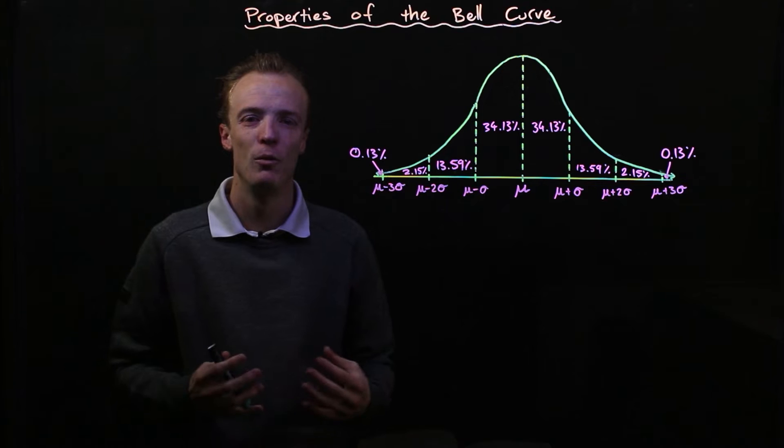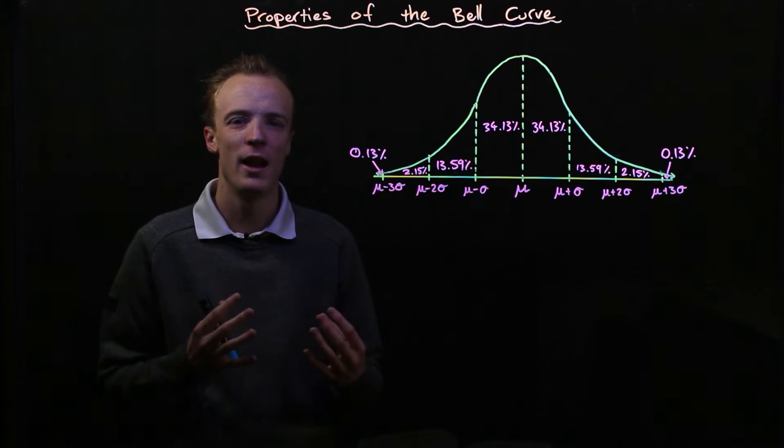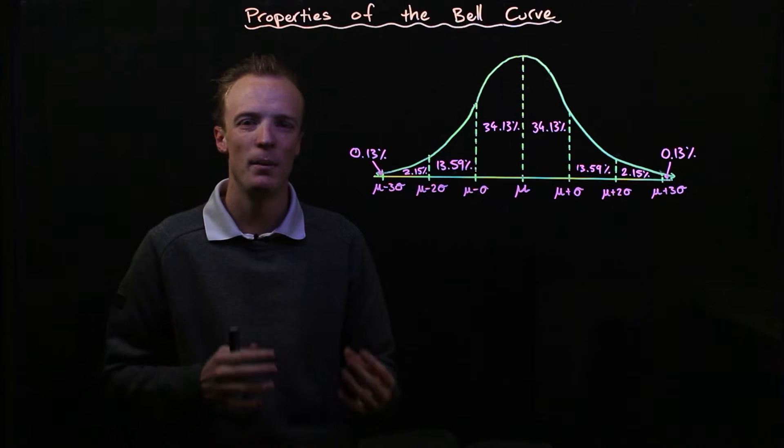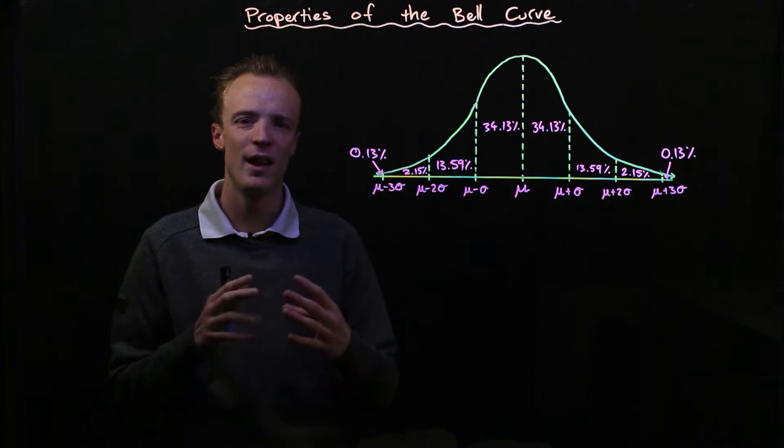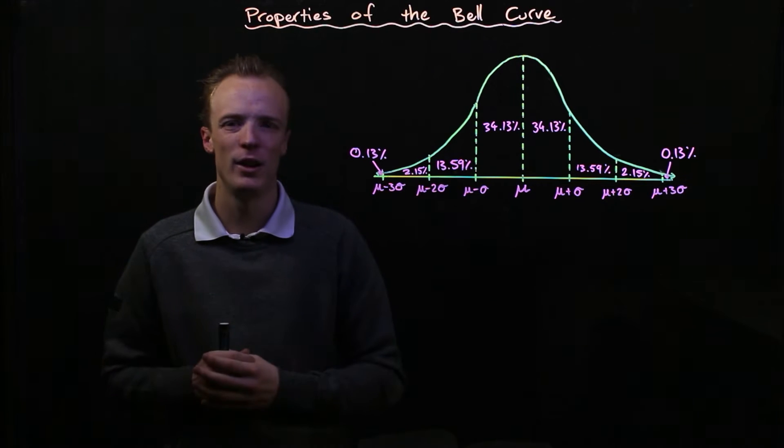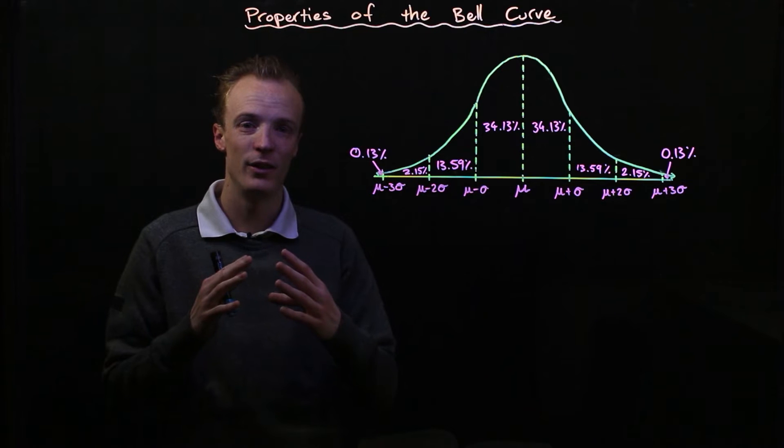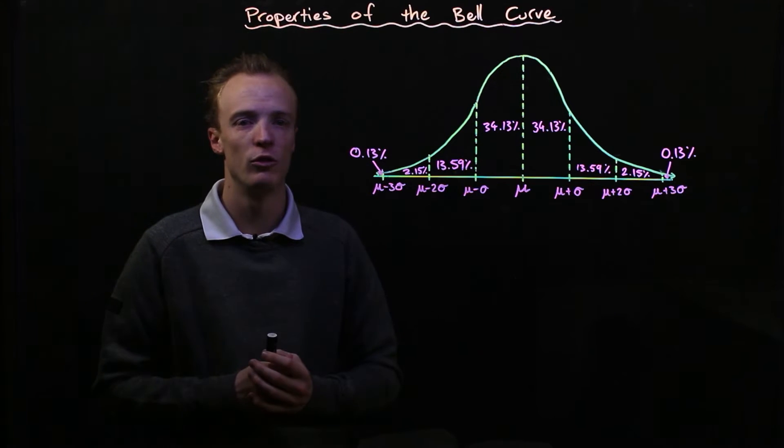In this video we're going to have a look at the normal distribution and some different properties of what's known as a bell curve. When we start graphing histograms and analyzing their shapes, there are many different situations where we'll find that the histogram has the shape of what we call a normal distribution.